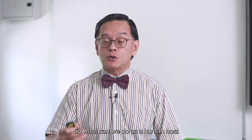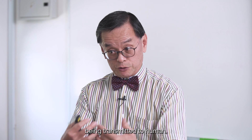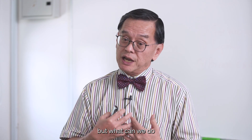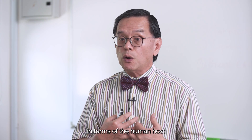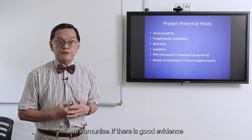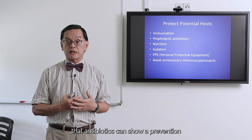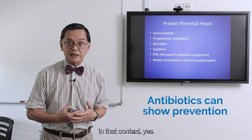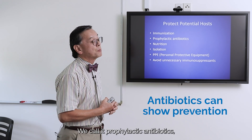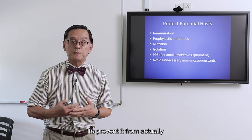So what can we do as a human host? In the context of pathogens being transmitted to humans, what can we do in terms of protection? If there is a vaccine available to protect the human host against a pathogen that can be easily transmitted, we immunize. If there is good evidence that antibiotics can provide prevention, we call it prophylactic antibiotics — you take the antibiotics to prevent transmission to the human host.